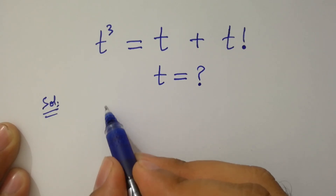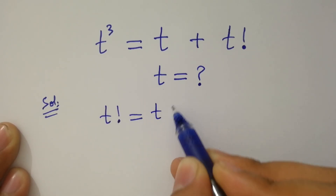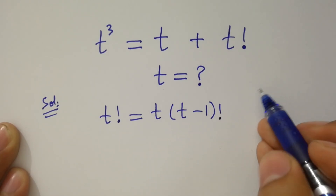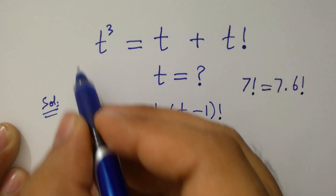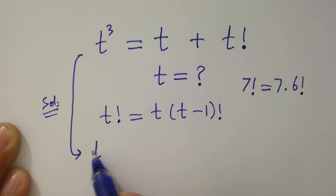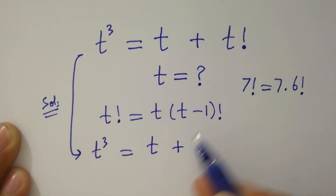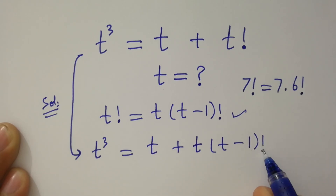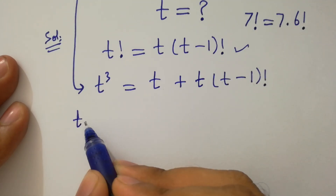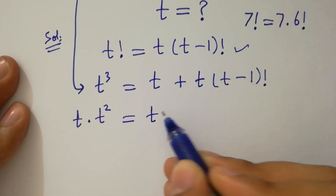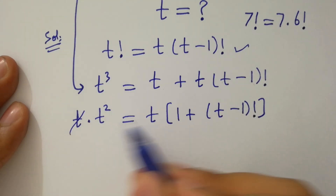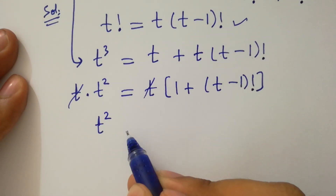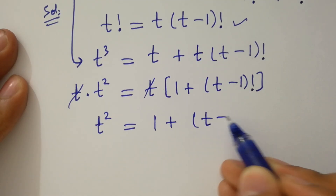As we know, t factorial equals t times (t-1) factorial — like 7 factorial equals 7 times 6 factorial. So t cubed equals t plus t factorial, which becomes t plus t times (t-1) factorial. That is t times t squared equals t, and taking t common we get t squared equals 1 plus (t-1) factorial.